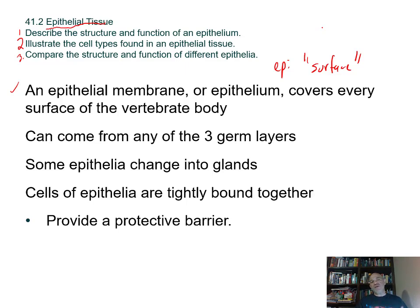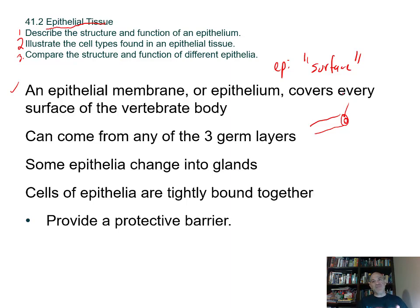If organs are hollow, the epithelium lines their internal surfaces as well. For example, the outside of the small intestine is covered with epithelium, and so is the inside hollow surface. The wall of the intestine itself contains other tissues inside the epithelia. A key question for identifying epithelia: does it cover a surface?